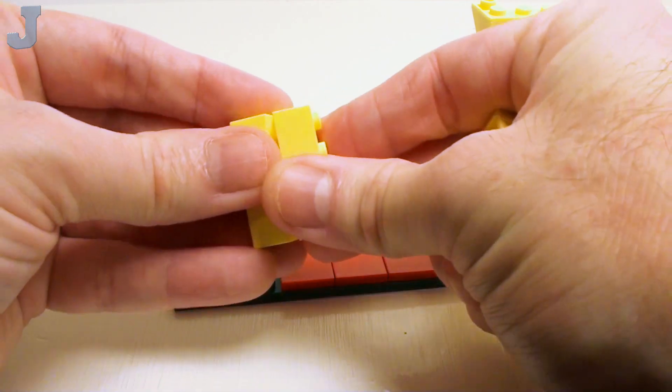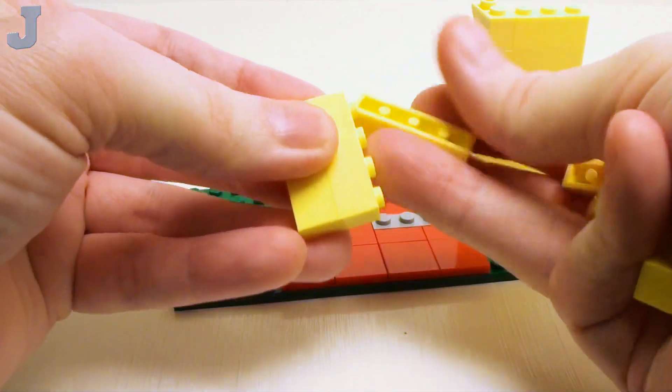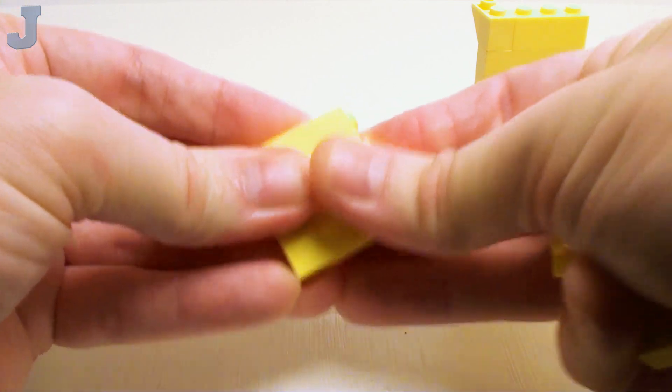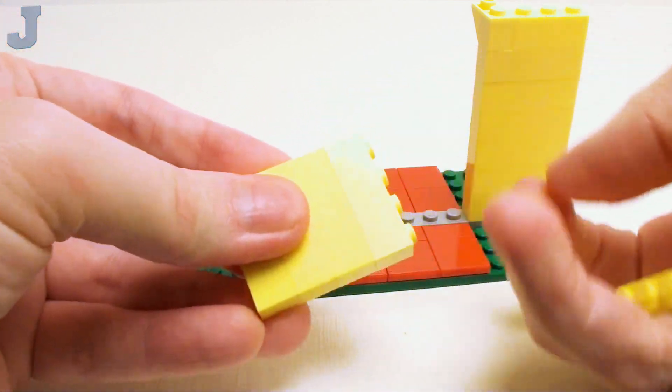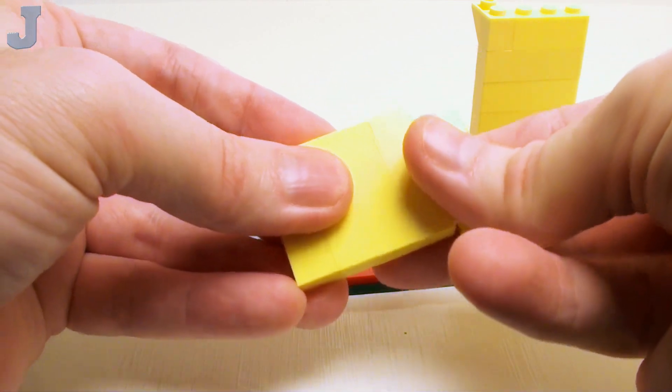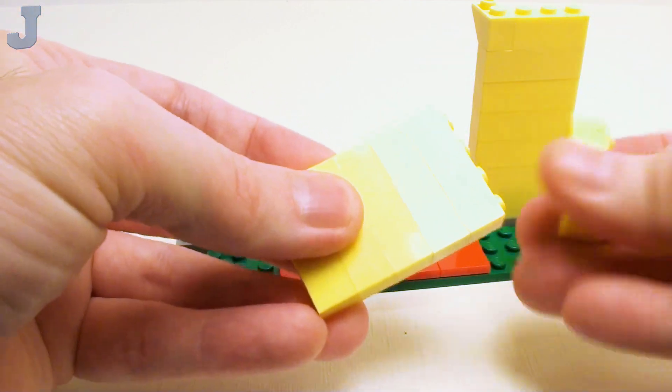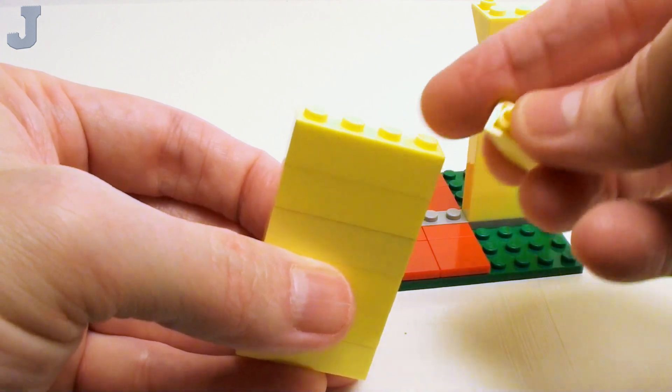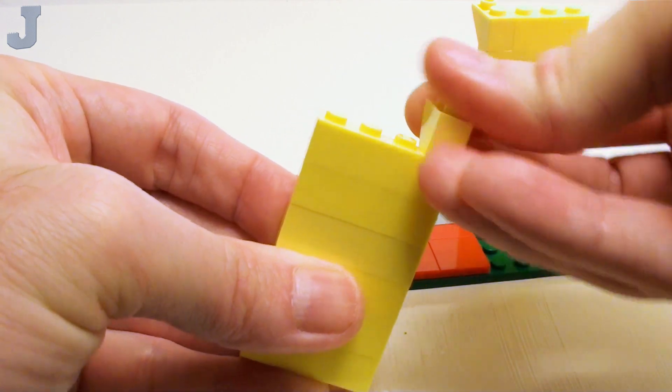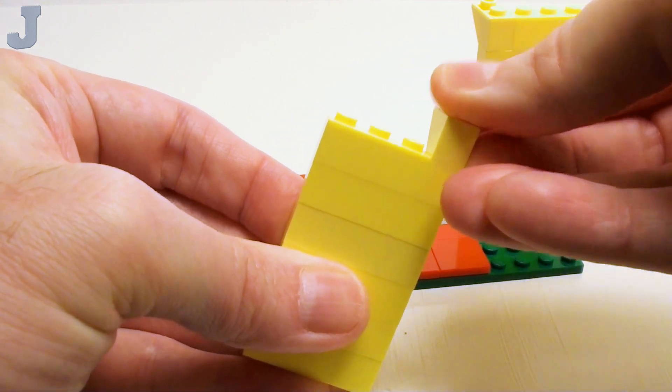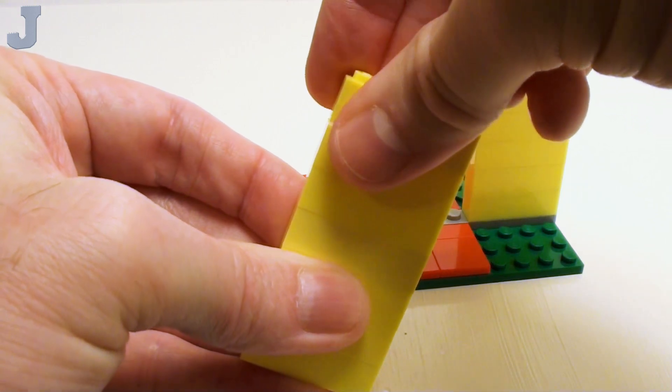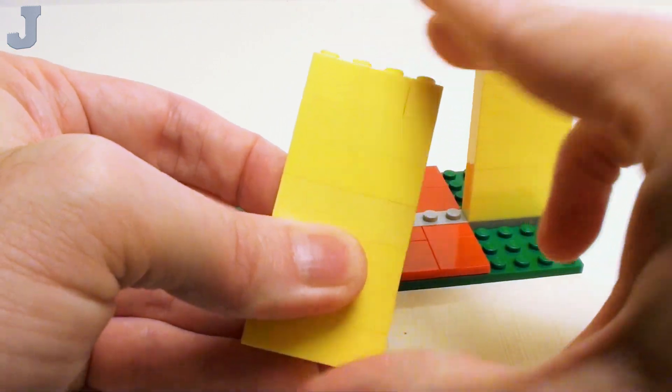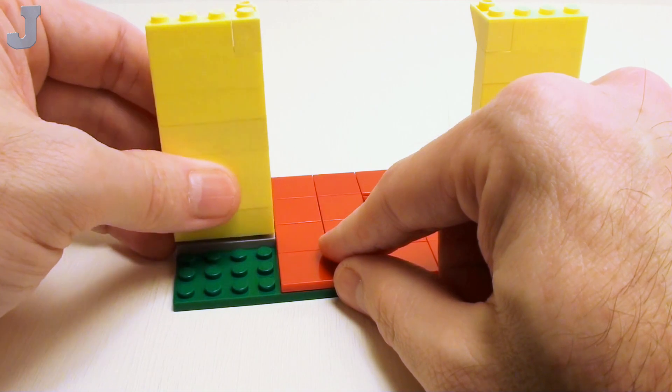Now let's build a left wall with 6 more 1 by 4 bricks. Just place these on top of one another. And we're going to take a 1 by 2 inverted 45 degree slope. We're going to place this on the right-hand side of this 1 by 4 brick. And a 1 by 3 brick right here. This will be the other stop for our door. Place that right there.